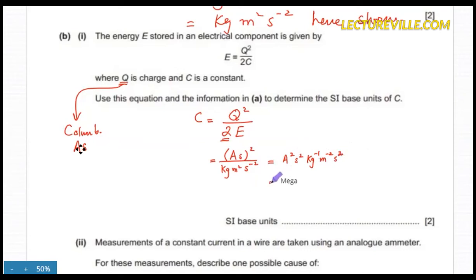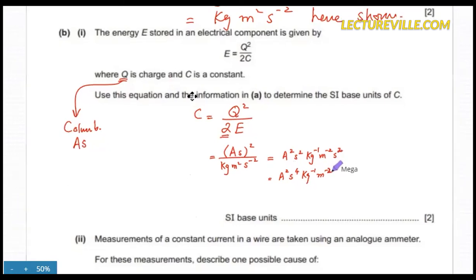Now can I simplify it further? I can see two S's over there. We have to make them one S. It becomes A squared S to the 4 per kg per meter squared. Okay, so SI base unit will be A squared S to the 4, one kg minus one, and one meter minus two. Now moving on.